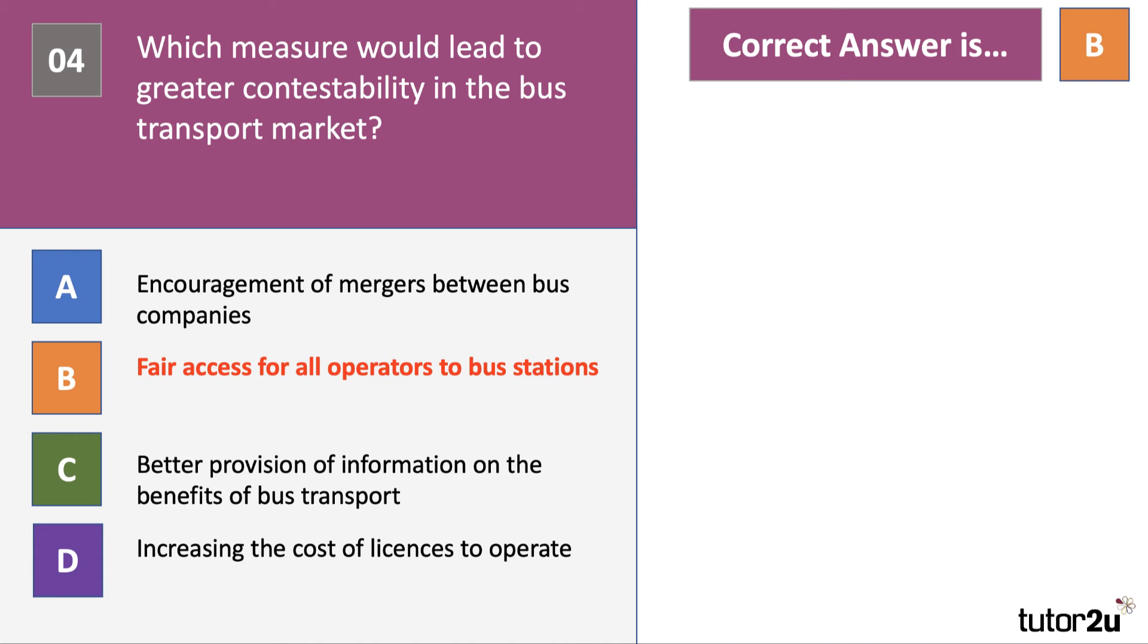Mergers would actually increase the monopoly power of the big players. Likewise, the cost of licences of course is a barrier to entry. So fair access is important. And this is quite important in many industries, giving open access to the market. Allowing for example a new bus company's spaces and slots in a bus station so they can operate some routes.